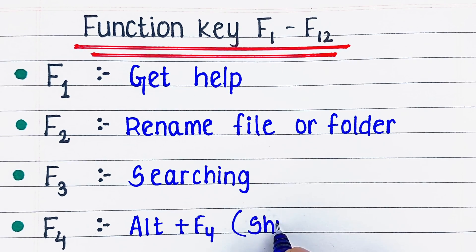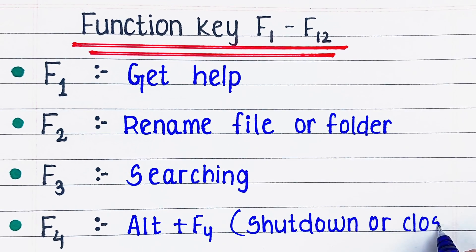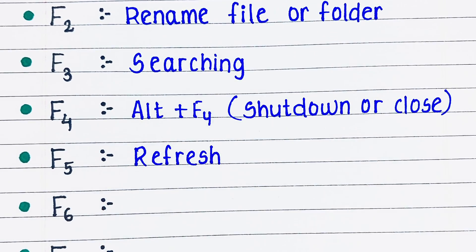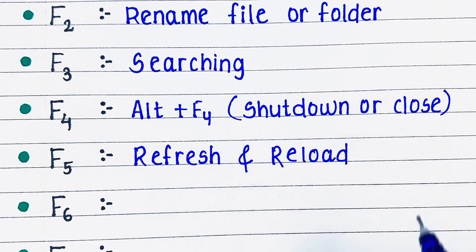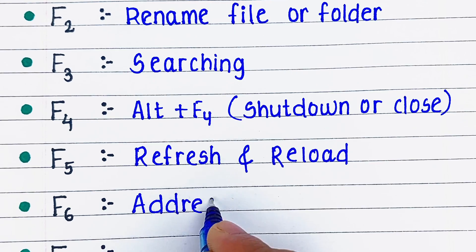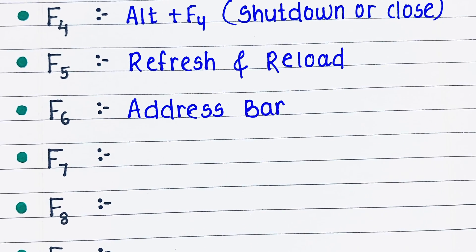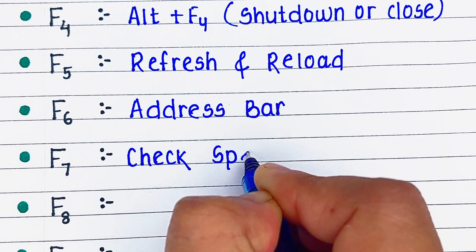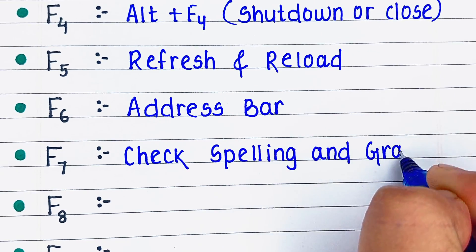Next is F4 — F4 along with the Alt key is used to shut down or close. Next is F5 — F5 is used to refresh and reload. Next is F6 — F6 is used for the address bar. Next is F7 — F7 is used for checking spelling and grammar.